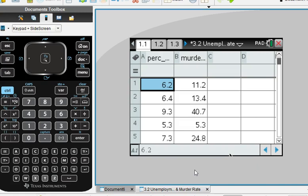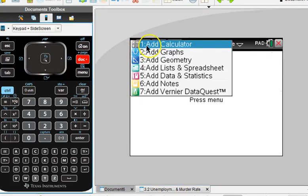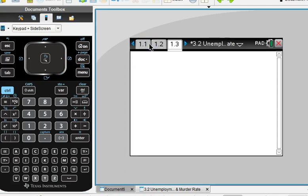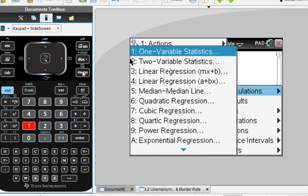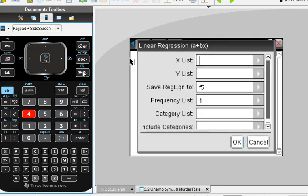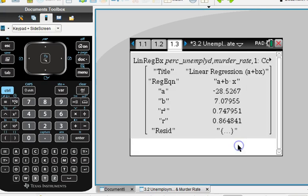Then we will go on to doing a linear regression. We can do this on a scatter plot and do the regression on the calculator, but I want to actually do it on a calculator page. So I'm going to add a page, Control-Doc, add a calculator page, and I'm going to go to menu, 6, 1, and then number 4, linear regression A plus BX. X list, we're going to do percent unemployed and Y list, murder rate, and you will see then these values.